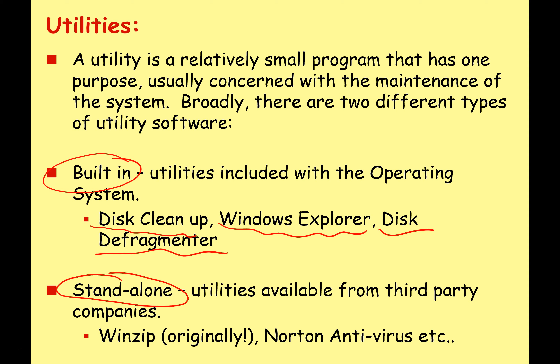You've also got various standalone utilities that you can download from third-party companies. A good example would be Winzip — originally Winzip did not come with Windows, you would have to download a trial edition to compress and uncompress files. Nowadays it is built into Windows. Another example of a standalone utility would be antivirus programs such as Norton, McAfee, or Kaspersky.